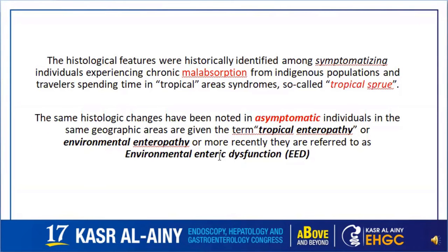Traditionally, these histological features were identified in symptomatic patients with chronic malabsorption from indigenous populations and travelers to tropical areas, and were thus called tropical sprue. The same histological findings were later also found in asymptomatic individuals in the same geographic areas and were termed tropical or environmental entropathy, or more recently environmental enteric dysfunction.